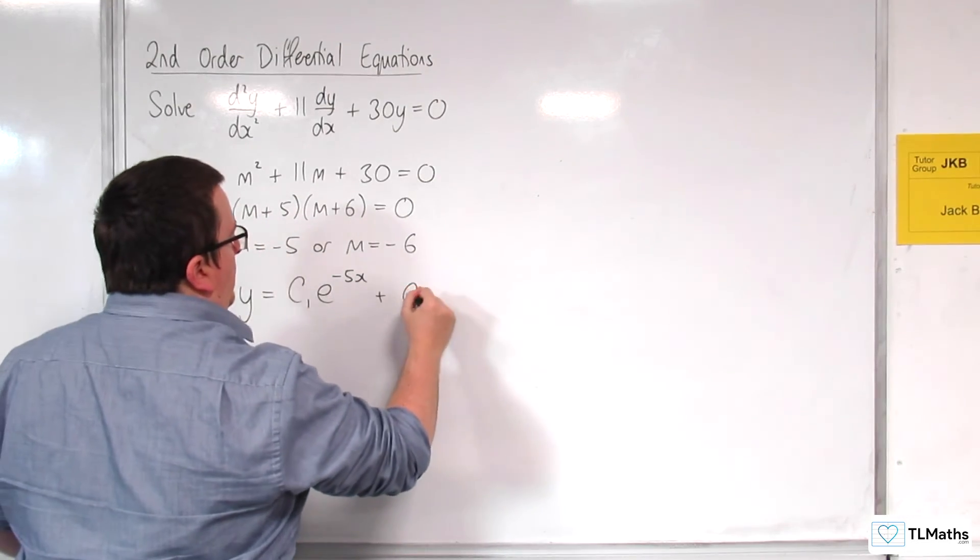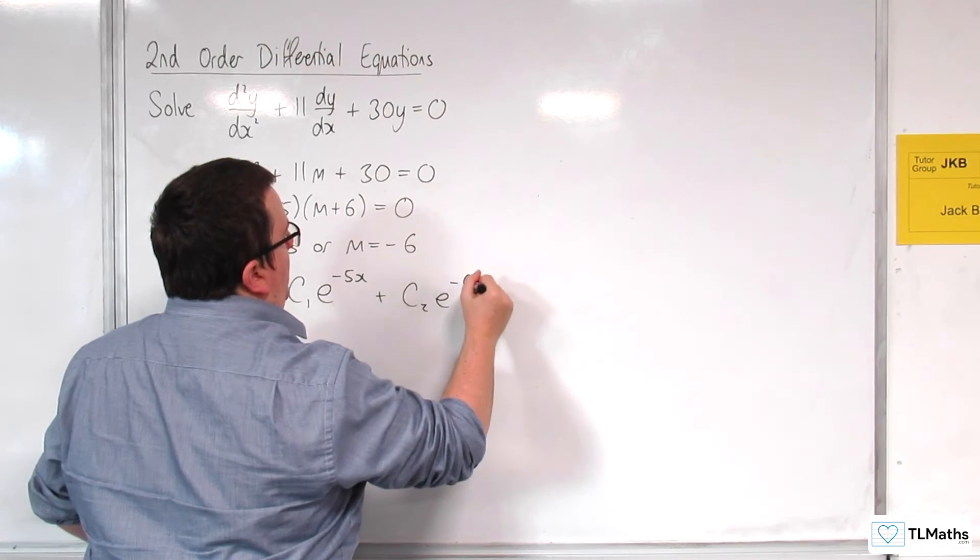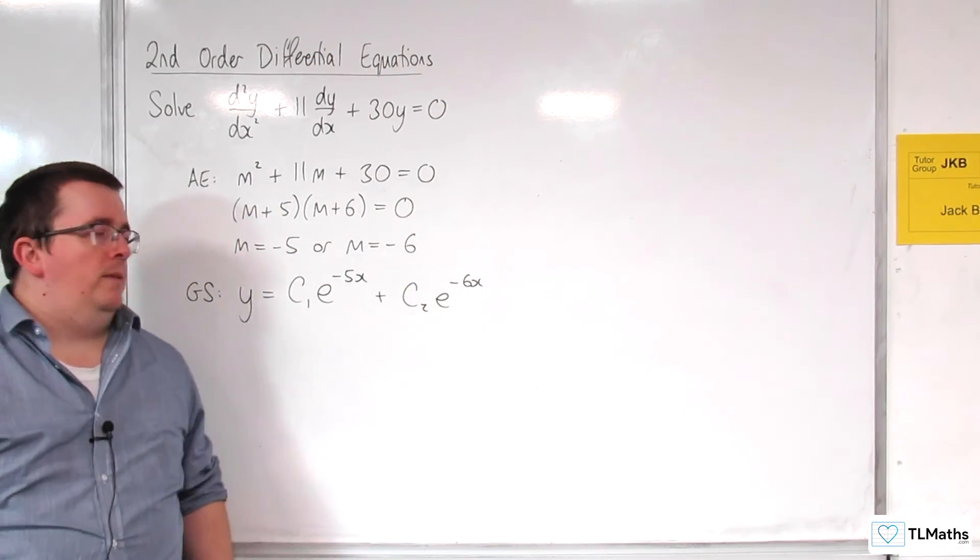Plus c₂e^(-6x) coming from there. And that is the general solution I'm looking for.